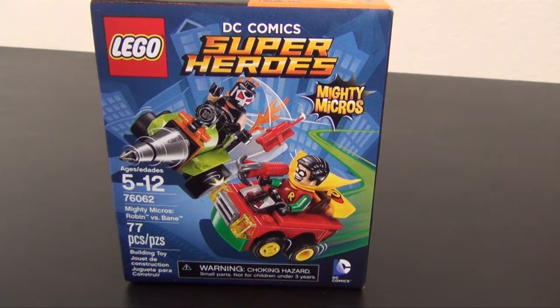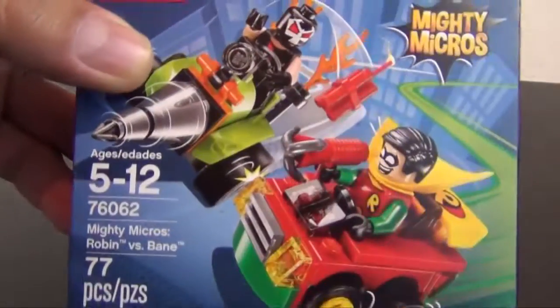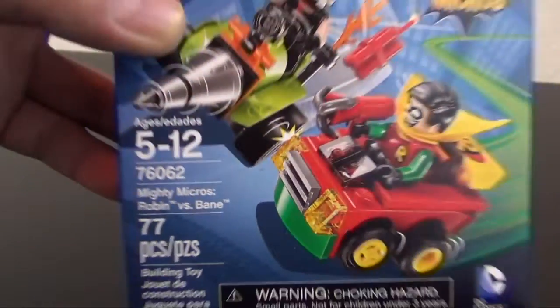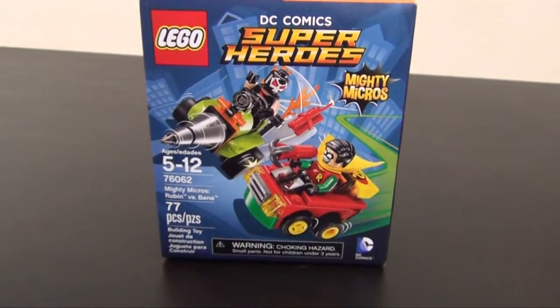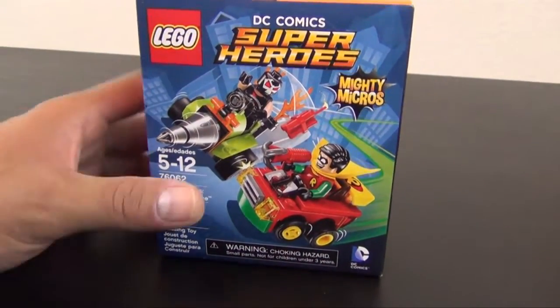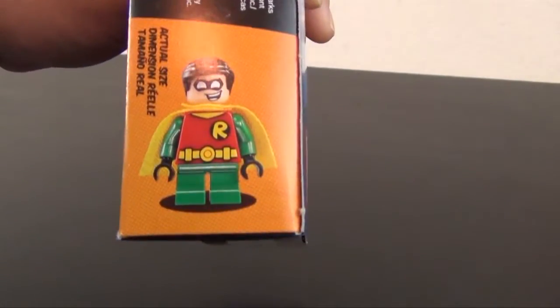Hey everyone, welcome back to The Hidden Brick where today we're going to build the LEGO DC Comic Superheroes Mighty Micros Robin versus Bane. There it is, 77 pieces, small set with two small minifigures that have the little micro legs.